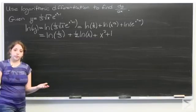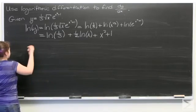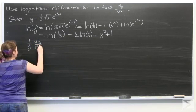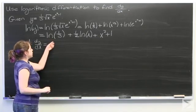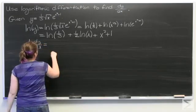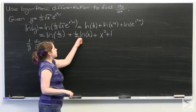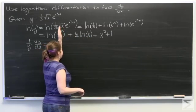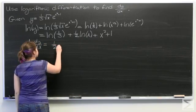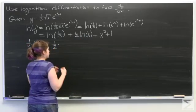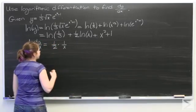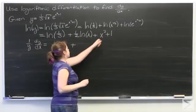Alright, so now we're ready to take the derivative. The derivative of the natural log of y is equal to one over y times dy/dx. Now I'm going to take the derivative of the natural log of one third — this is a constant, so it's zero, and I'm not going to write anything. Then the derivative of one half times the natural log of x is one half times one over x times the derivative of x, which is one.